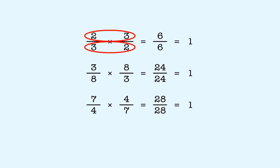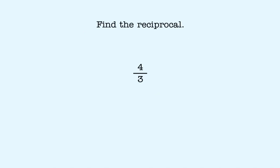So we can use this fact to find the reciprocal of any number. We just switch the numerator and denominator. To find the reciprocal of four-thirds, we switch the numerator and denominator. The reciprocal is three-fourths.